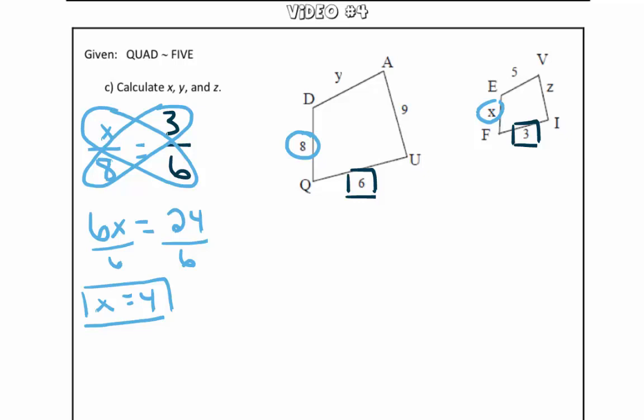To solve for the remaining variables, we are going to set up our proportions just the same way. So to solve for y, we are going to see what other value in the other quadrilateral corresponds to y. So we have y over 5, because those are our corresponding parts, is equal to 6 over 3.